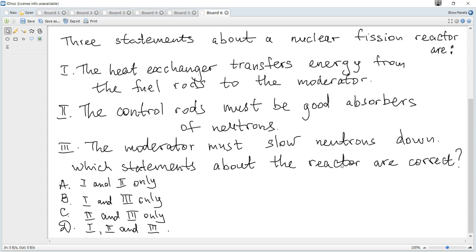The purpose of a moderator is to slow neutrons down - definitely, it's correct. And the purpose of control rods is to absorb extra neutrons - also the second is correct.